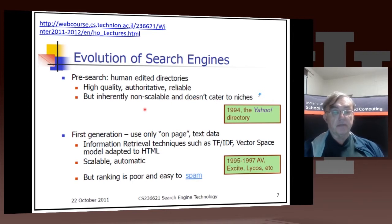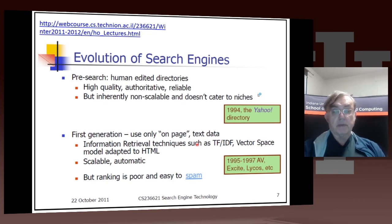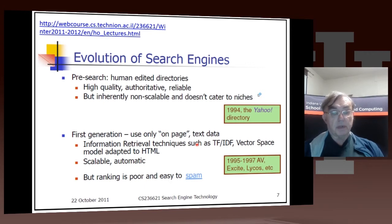Then we had the first generation search engines, which only used effectively the text data on the page. There are various information retrieval techniques which we will discuss — TF, term frequency slash inverse document frequency, vector space models — where documents and queries sit in a space. These were capable of scaling much better than the original Yahoo method. Lycos and Excite were early versions, and they did not do much work on ranking.